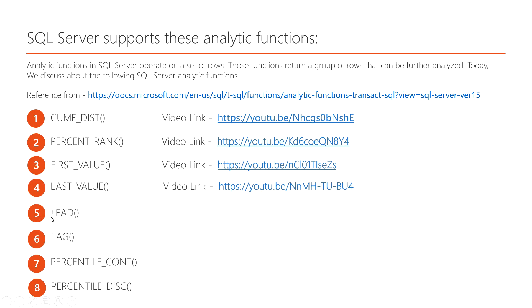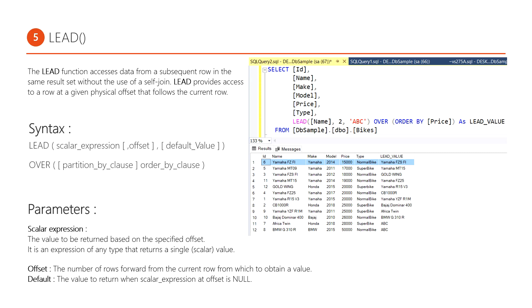What is the LEAD analytical function? The LEAD analytical function accesses data from a subsequent row in the same result set without the use of a self-join. The LEAD function always looks up the value within the same record set and puts that particular value into the current row. LEAD provides access to a row at a given physical offset that follows the current row.